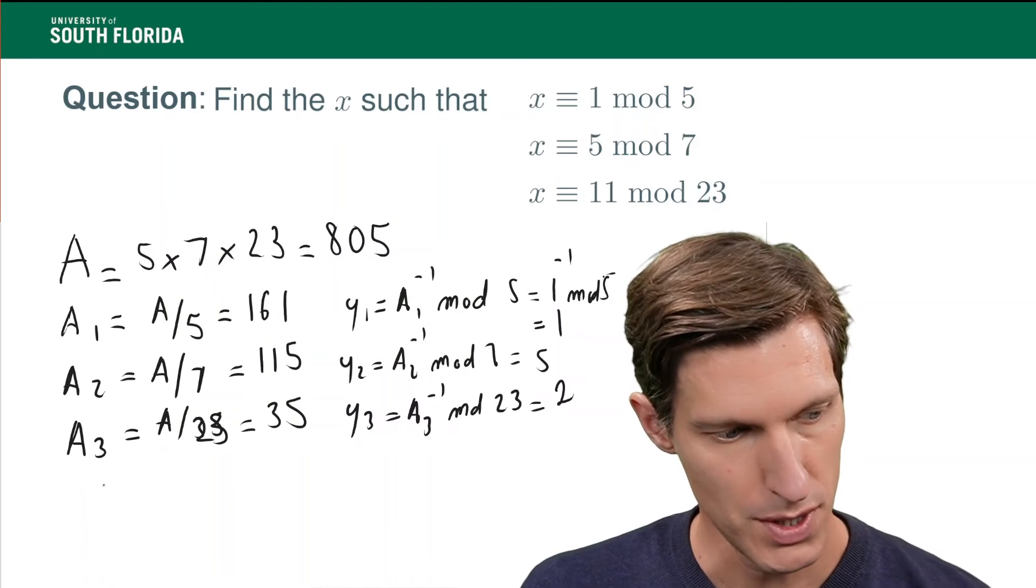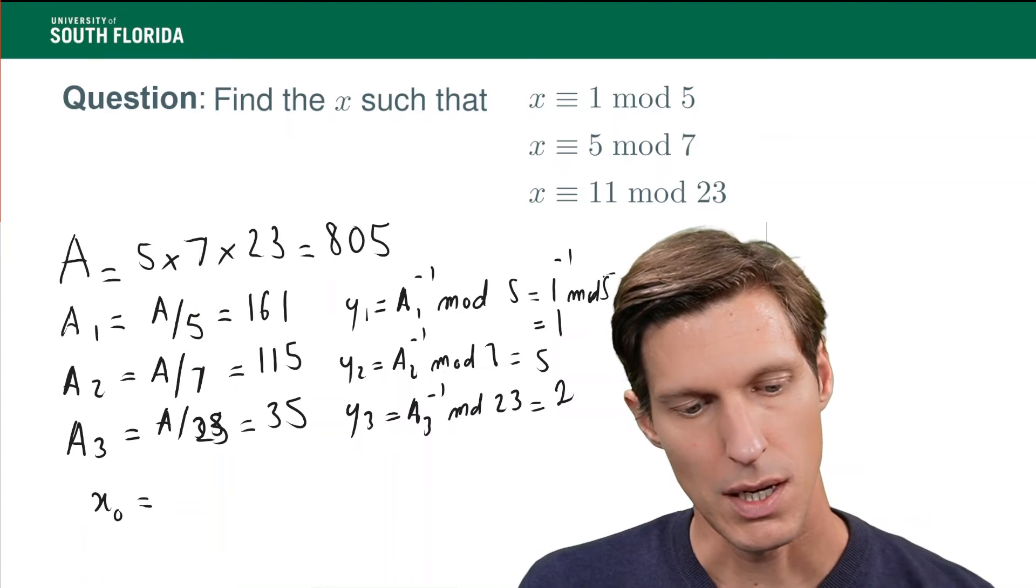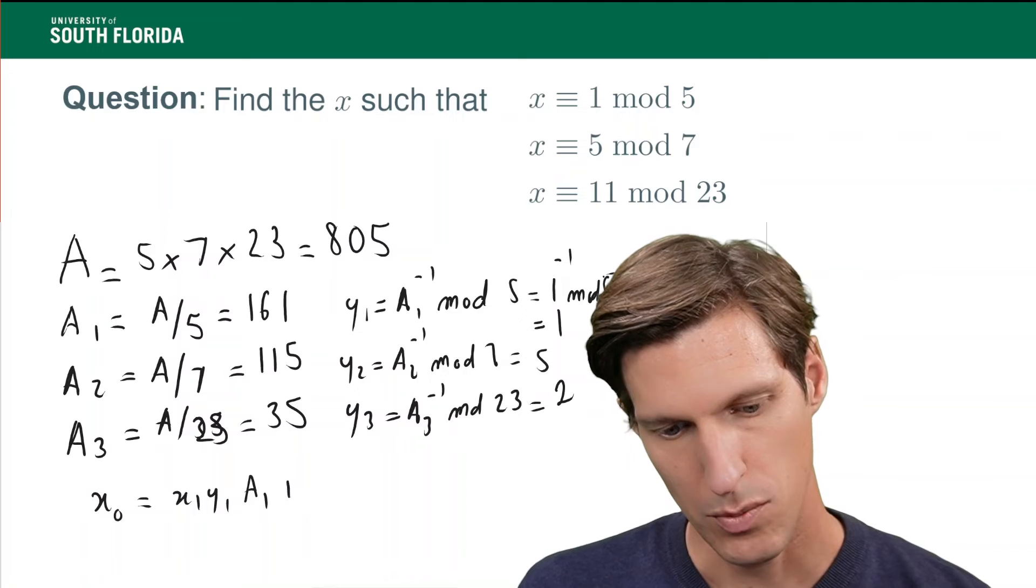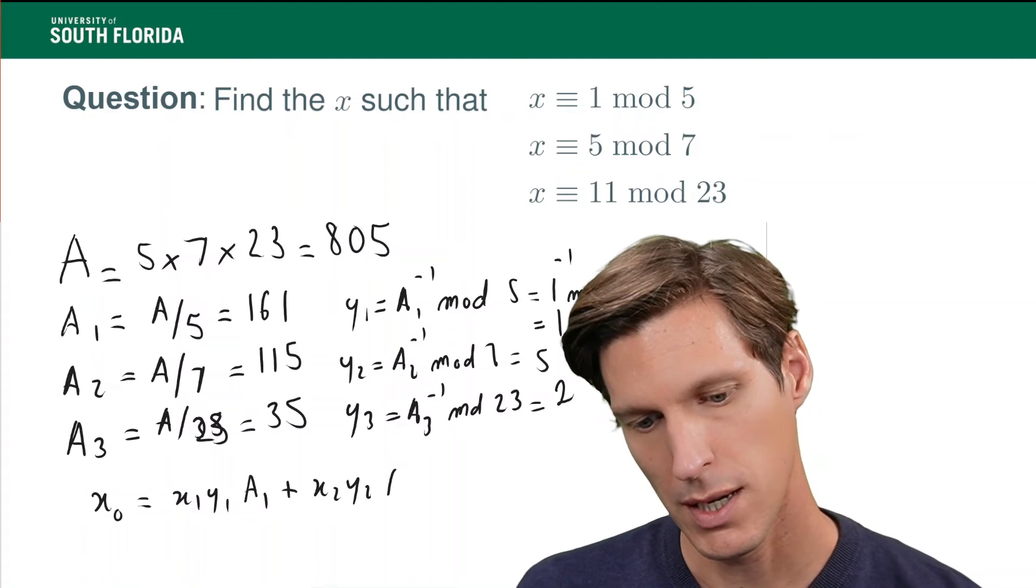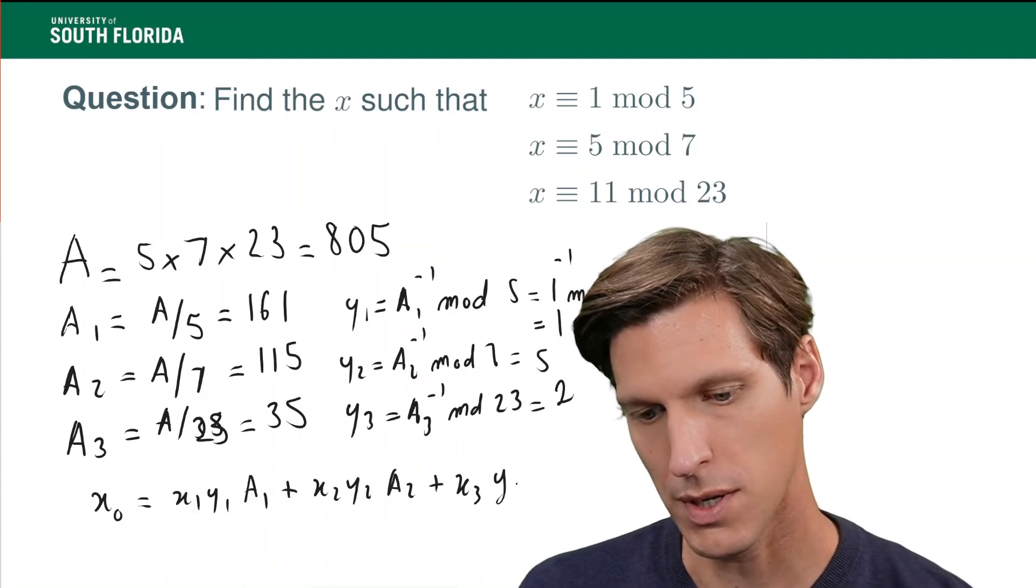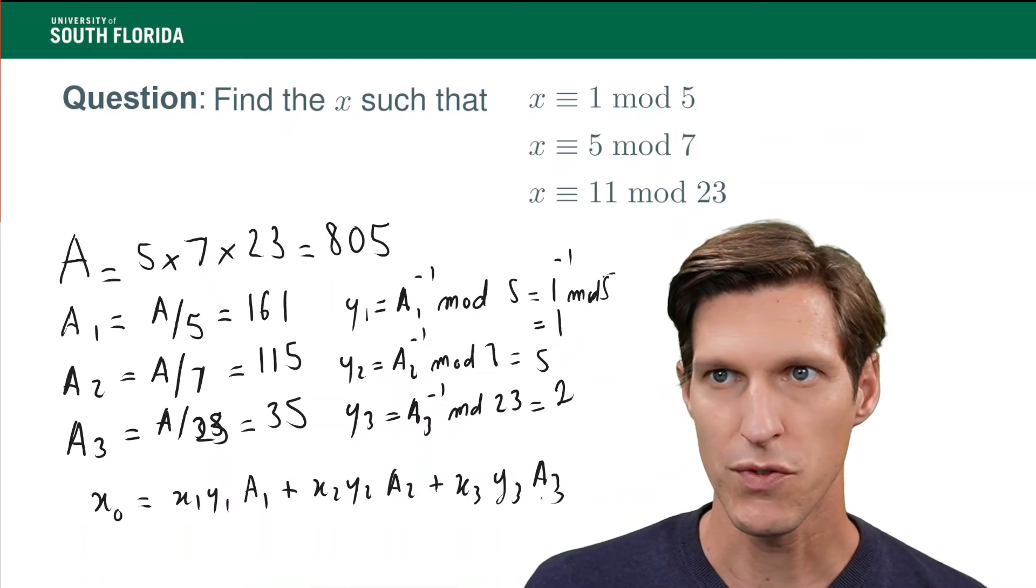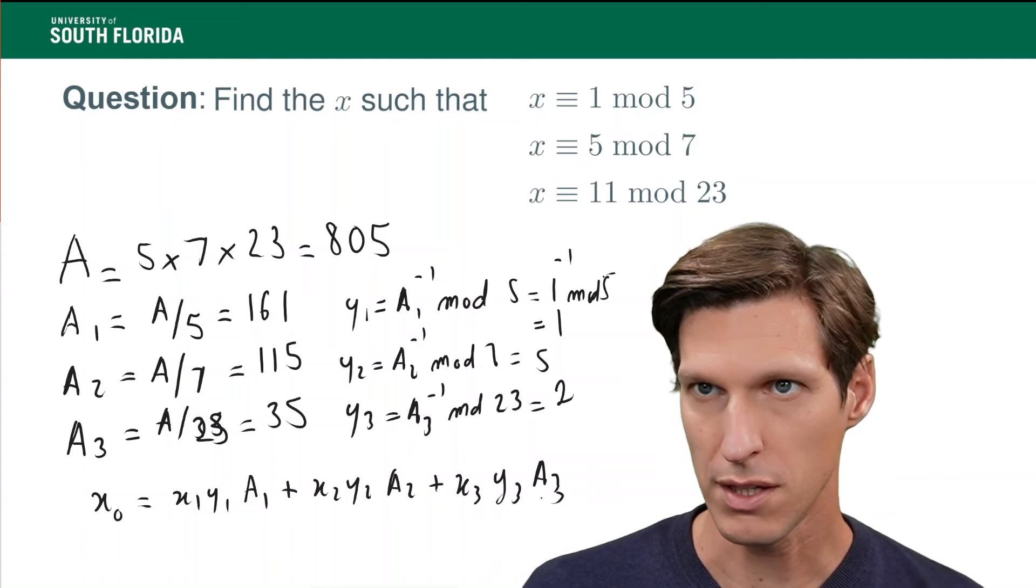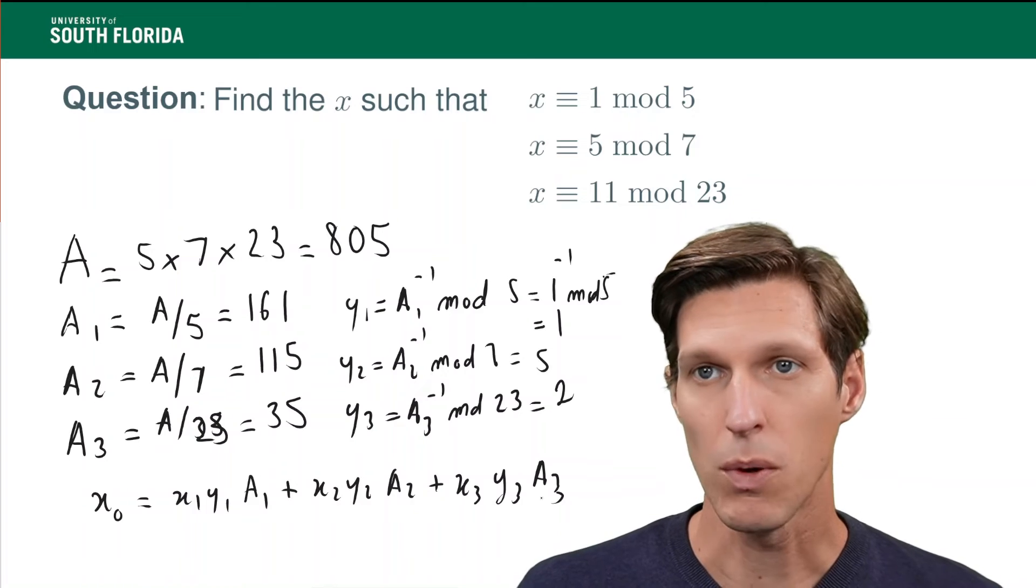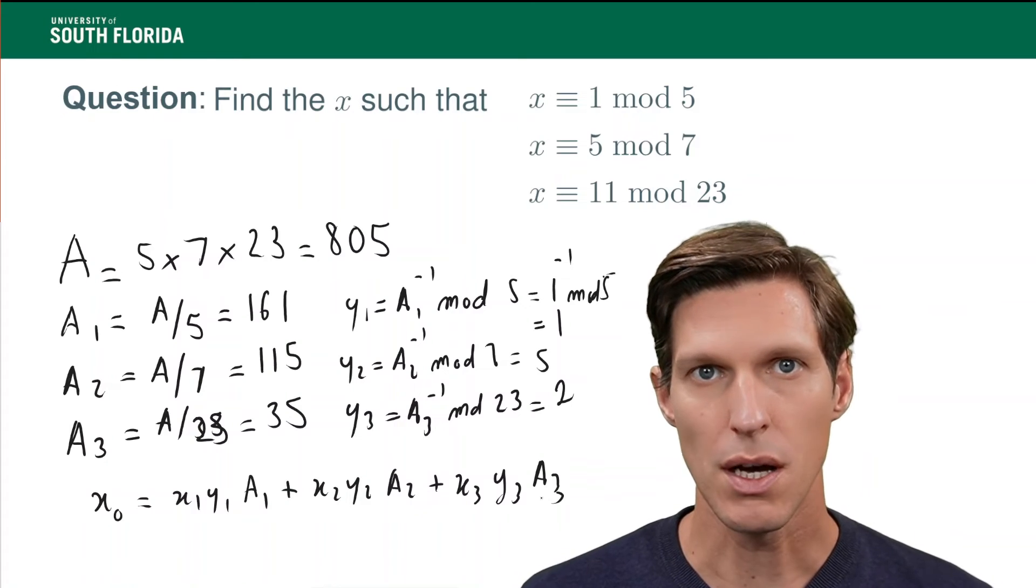And so, what we know from the lecture notes is that there is an x0, which is x1 y1 times a1 plus x2 y2 a2 plus x3 y3 a3. For x1 equals 1, x2 equals 5, and x3 equals 11, the values of x mod 5, 7, and 23. This happens to satisfy the congruence relation that we want, being congruent to 1 mod 5, 5 mod 7, 11 mod 23—for the proof see the lecture notes.